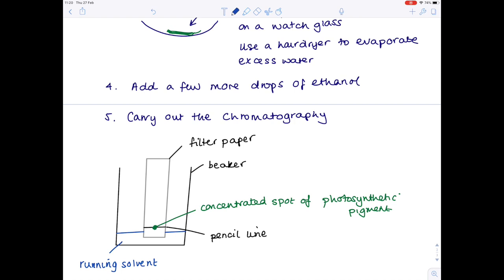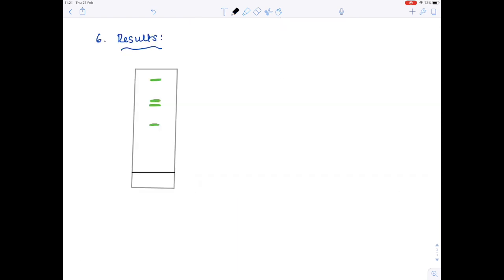So let's look at some potential results. Here's our filter paper again, here's the pencil line, here was the starting point. Now, notice if there was a dot which remained on the starting point, it would mean that particular pigment was insoluble. However, in this set of results, we can see that the pigments have all run, which means they're all soluble.